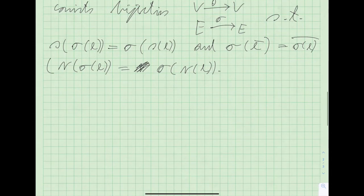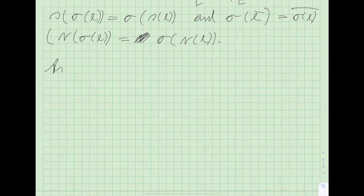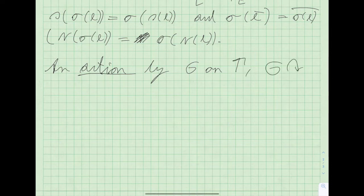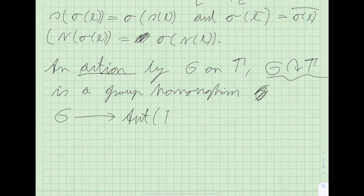So that's a graph automorphism. An action by a group G on our graph gamma — denoted with a curved arrow — is really just a group homomorphism from G into the group of automorphisms of the graph.